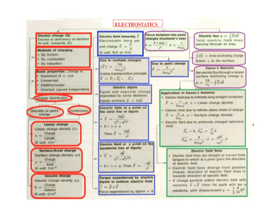The methods of charging — there are three methods: by friction, by conduction, by induction. In friction, when two bodies are rubbed together, electrons are transferred from one body to the other. For example, when a glass rod is rubbed with silk, the rod becomes positively charged while the silk becomes negatively charged.